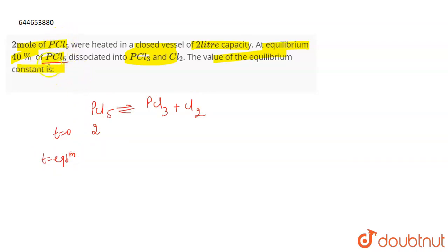At equilibrium, 40 percent of PCl5 is getting dissociated. If initially there were two moles, then 40 percent got dissociated, which means 0.8 moles. Out of two moles, 0.8 moles got dissociated.